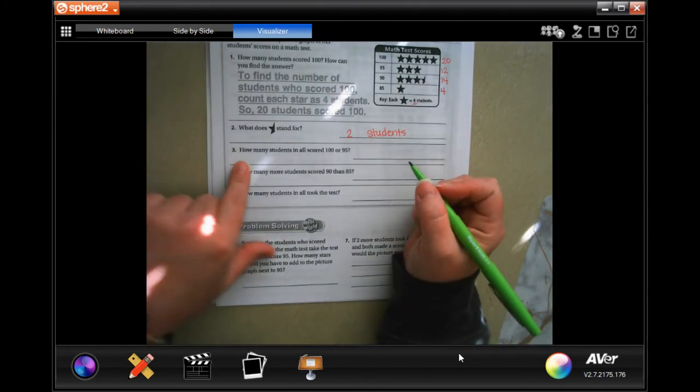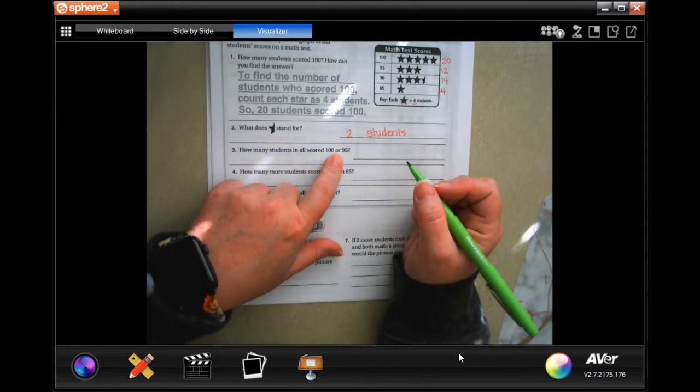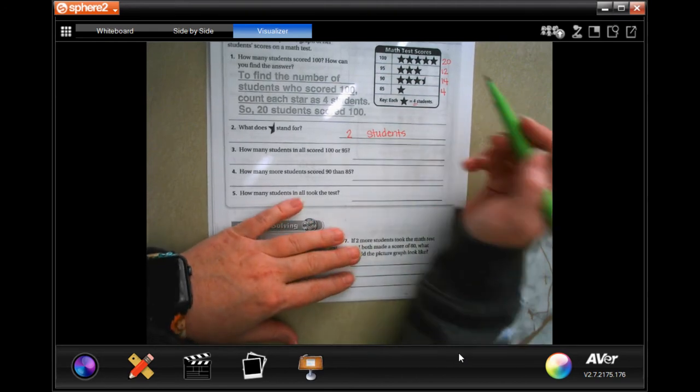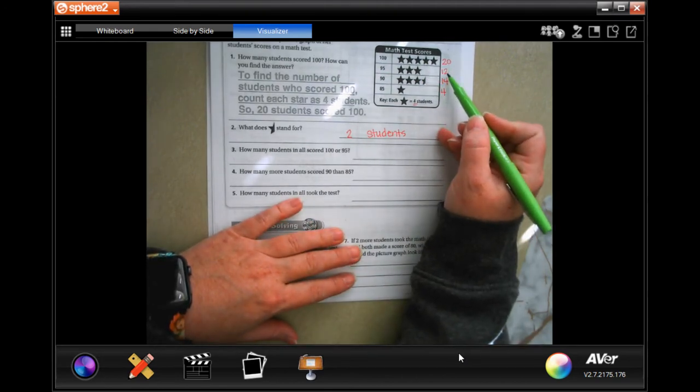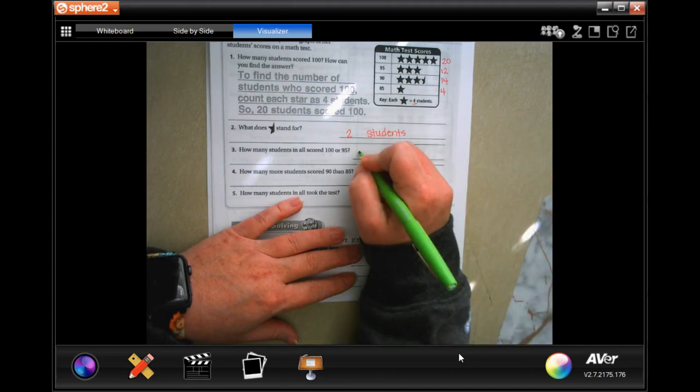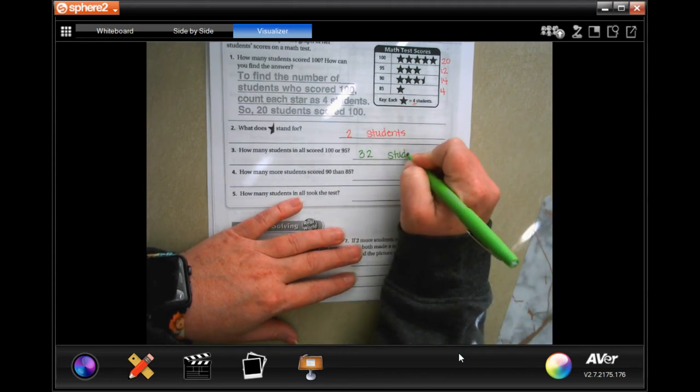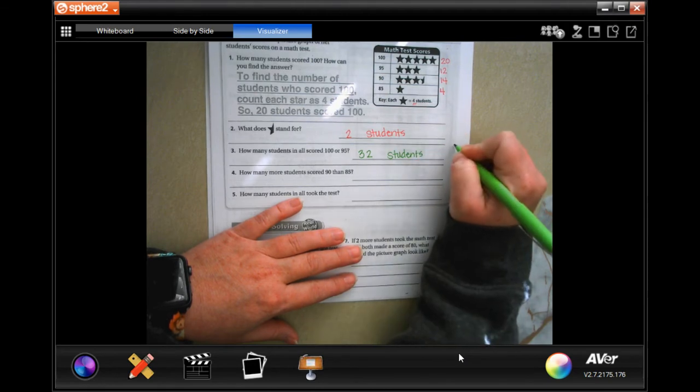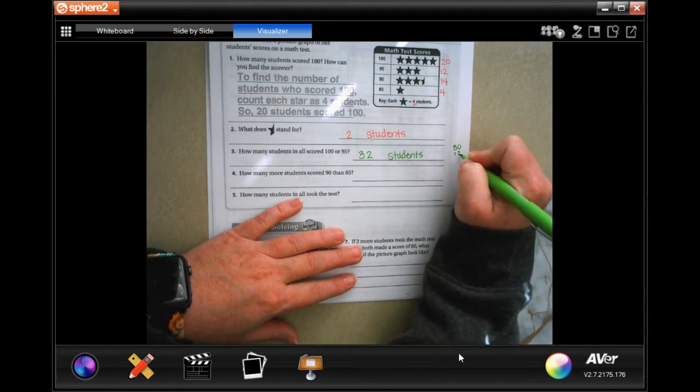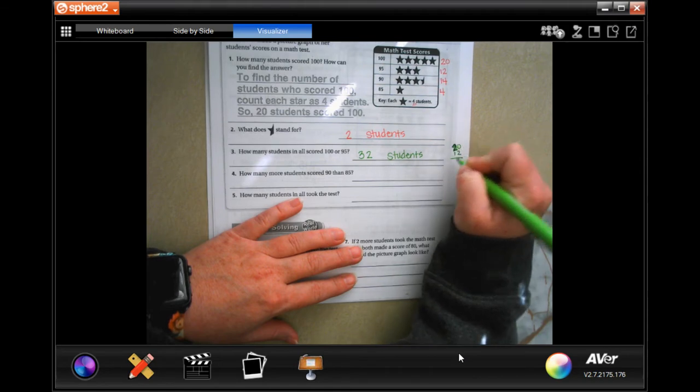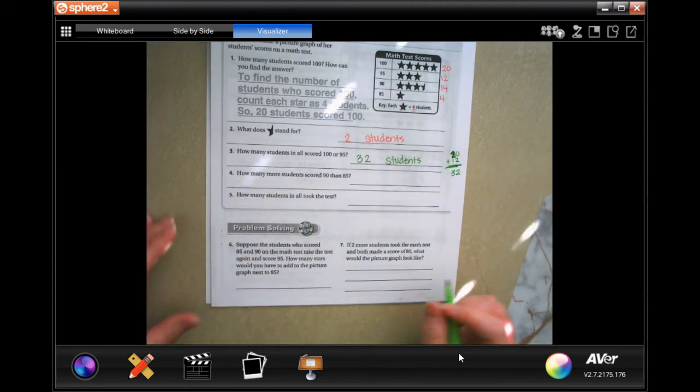Okay. How many students in all scored a hundred or ninety-five? So we have twenty plus twelve. Well, twenty plus twelve, that's thirty-two students. You can always do twenty and twelve, and add those up, and we'll get thirty-two.